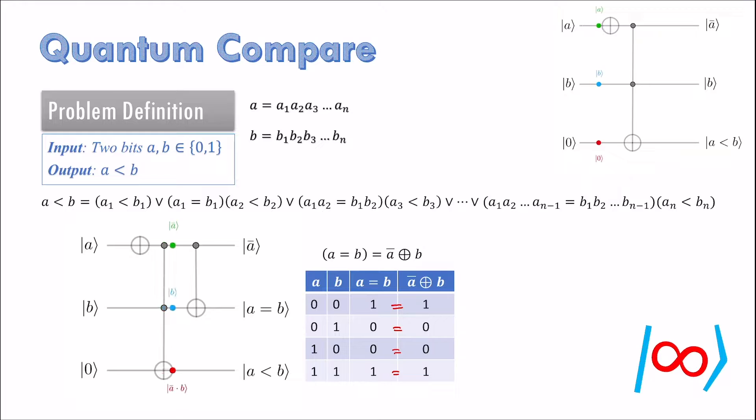Since this circuit will be repeatedly used, for simplification, we denote it as the following black box.